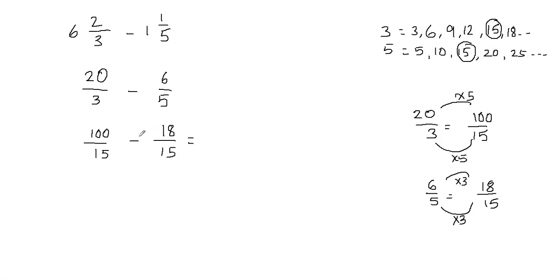To subtract the fractions, we subtract the numerators and leave the denominator as it is. The denominator stays 15. And 100 minus 18 is 82. So we get 82 over 15.